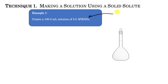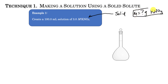Since we're starting with a solid, the first goal is to figure out the mass of potassium nitrate we need. Once I figure out that mass, I can add that solid to my volumetric flask. A volumetric flask only has one measurement mark on it and a seal at the top — you measure to that single point.